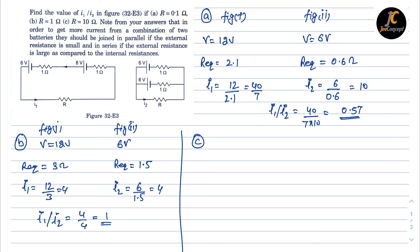For part c, R is now 10 ohms. For figure 1 the voltage is 12 volts and for figure 2 the voltage is 6 volts. The equivalent resistance for figure 1 is 10 plus 1 plus 1, which equals 12 ohms.